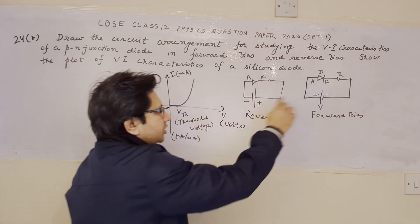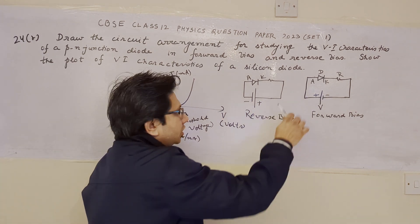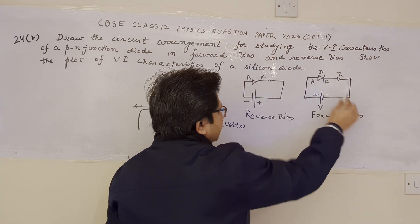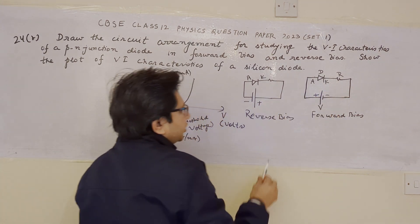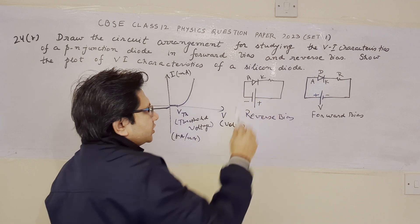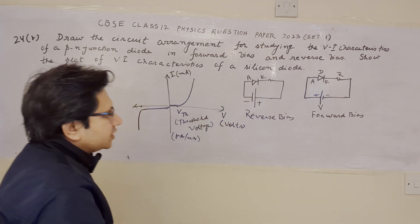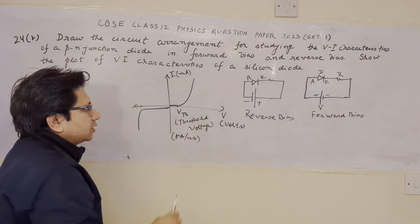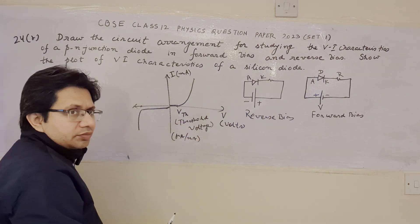So we have to draw these three diagrams: first is the forward bias circuit arrangement, second is the reverse bias circuit arrangement, and third is the characteristic curve.